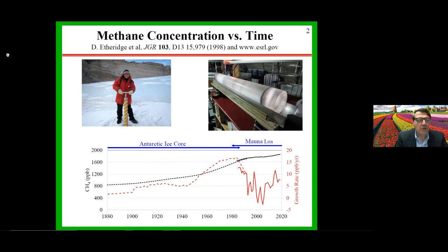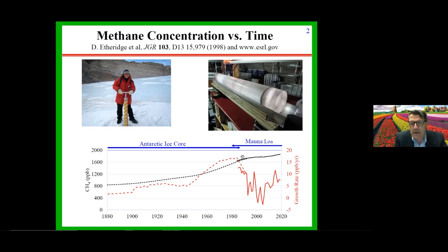The black curve shows methane concentration in units of parts per billion. Notice in 1880 it's about 800 parts per billion, and this has increased over the 20th century to about 1.8 parts per million, or 1800 parts per billion. The dashed curve is ice core data; in the last 50 years we have measurements from Mauna Loa, a volcano in Hawaii, which measures methane gas concentration directly in the air. The Mauna Loa measurements agree nicely with the Antarctic ice core.